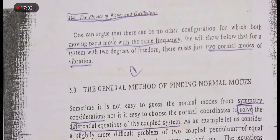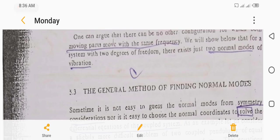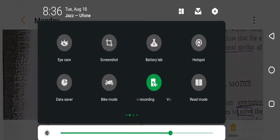One can also show that there can be no other configuration for which both moving parts move with the same frequency۔ We will show below that for a system of 2 degrees of freedom, there exist just 2 normal modes of vibration۔ ہم نے یہاں تک بتایا کہ جب 2 masses identical ہوں تو 2 normal modes of vibration ہوتے ہیں۔ اگر masses identical نہ ہوں تو وہ ہم انشاءاللہ next topic میں پڑھیں گے: general method of normal modes۔